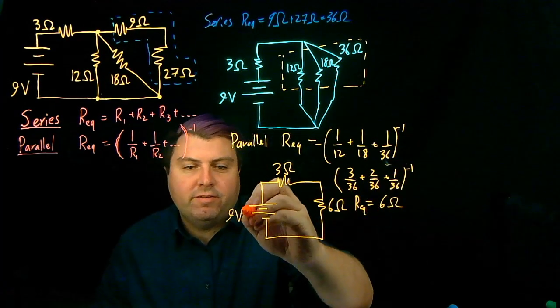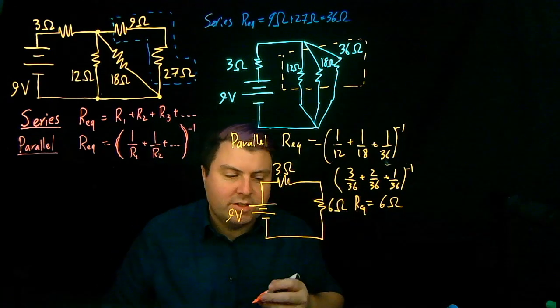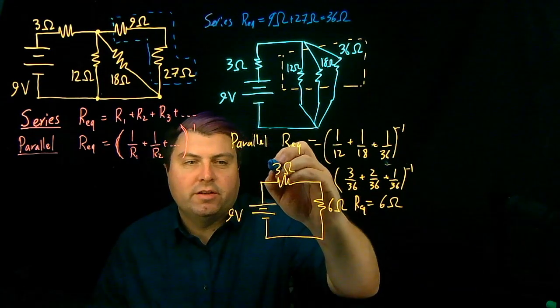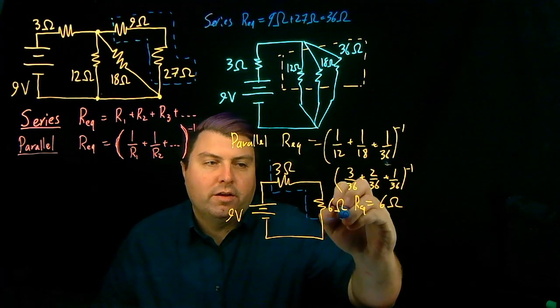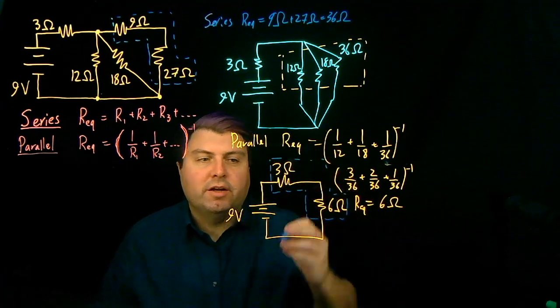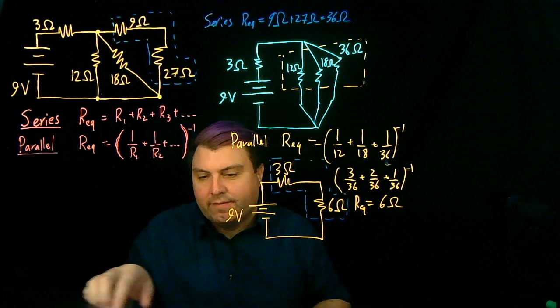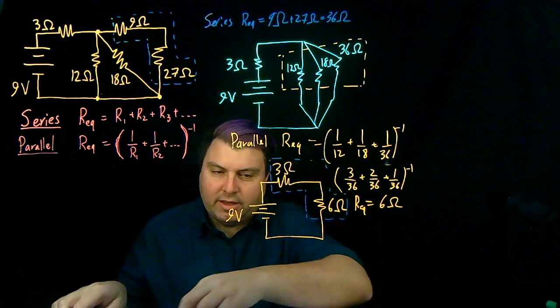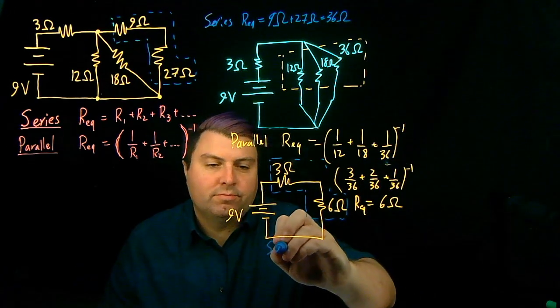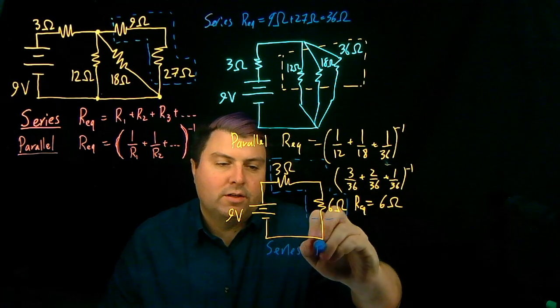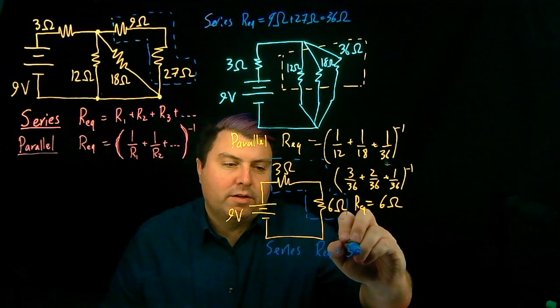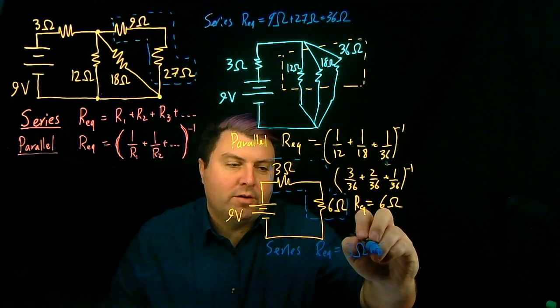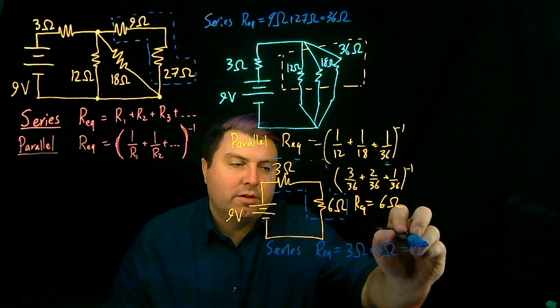Now we have here 9 volts, 3 ohms, 6 ohms, and we can take a look and these 3 and this 6 are in series with each other. And so we then have our series rule. I think we feel pretty good that 3 plus 6 ohms would equal 9 ohms.